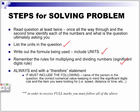Remember the rule for multiplying and dividing numbers in terms of the significant digits rule. The significant digits rule applies to all these problems where the least number of significant digits in your question should be the same number of significant digits as your answer. So you're going to have to round off accordingly. And then always end with a therefore statement. It must include the following: Name of the person in the question, correct numerical value, keeping in mind the rule for significant digits, and the item that you are looking for. If you're looking for speed, if you're looking for distance, time, acceleration, and whatnot.